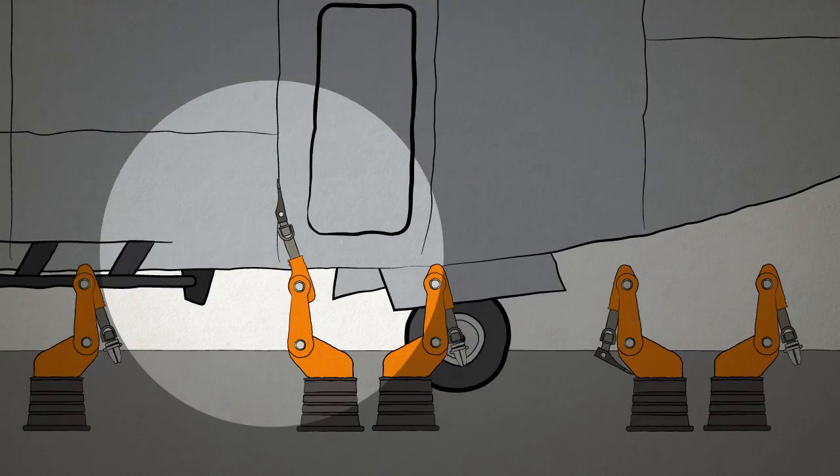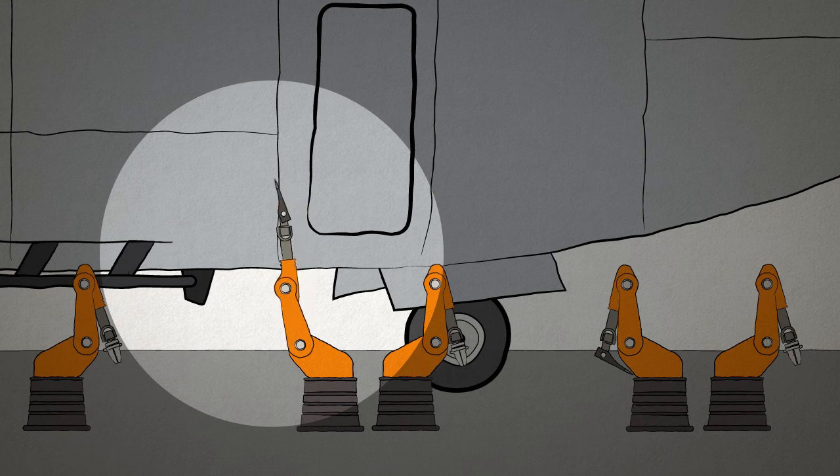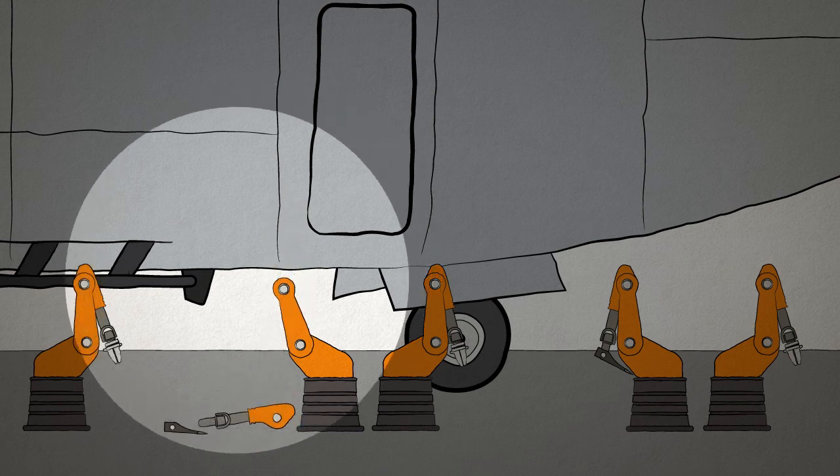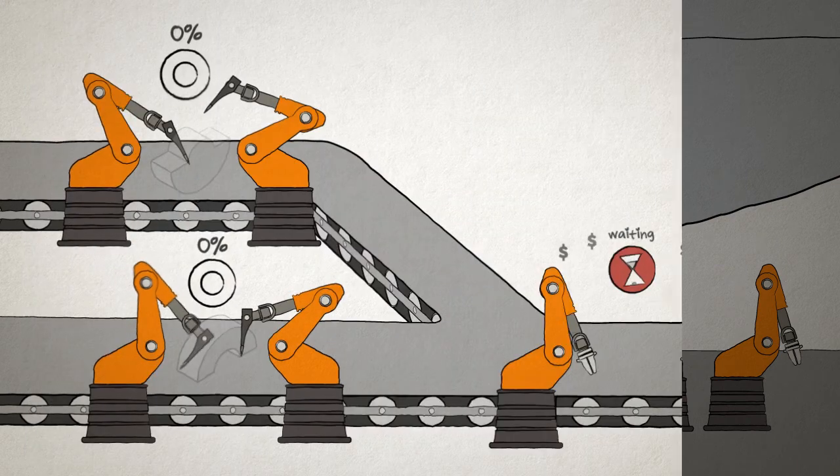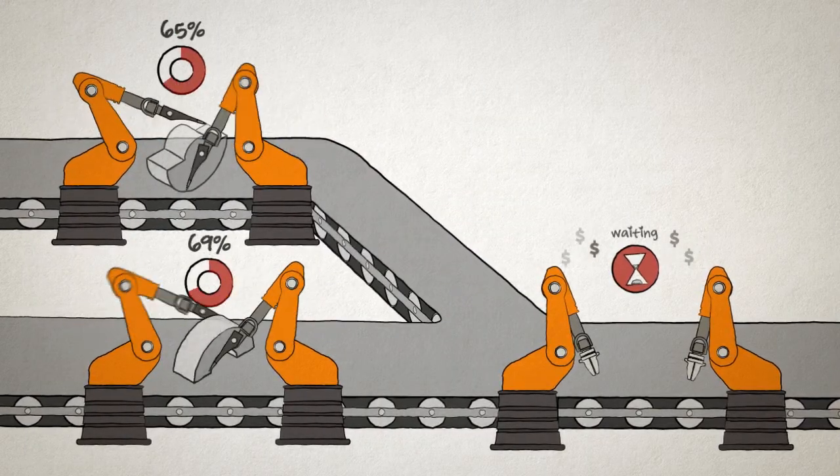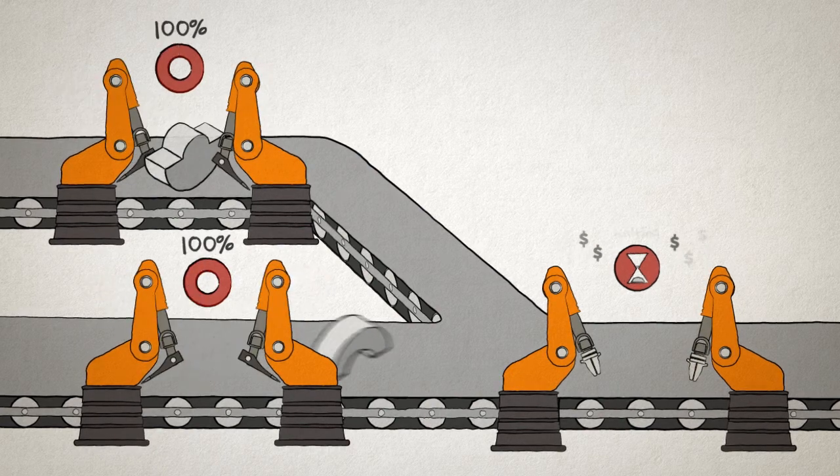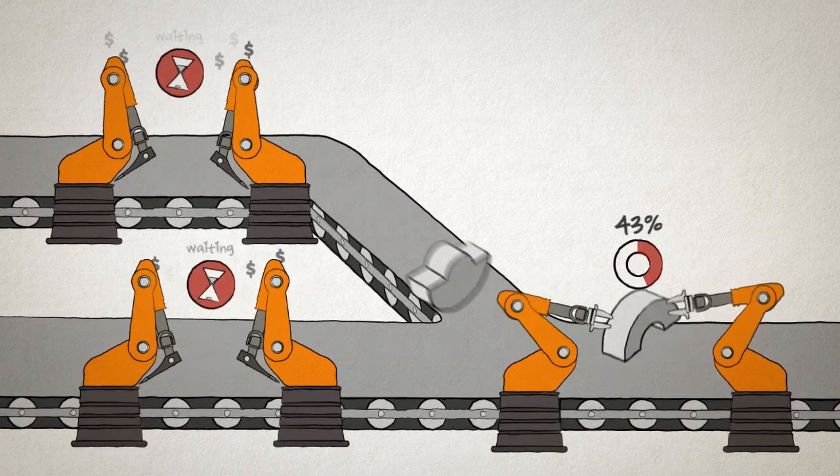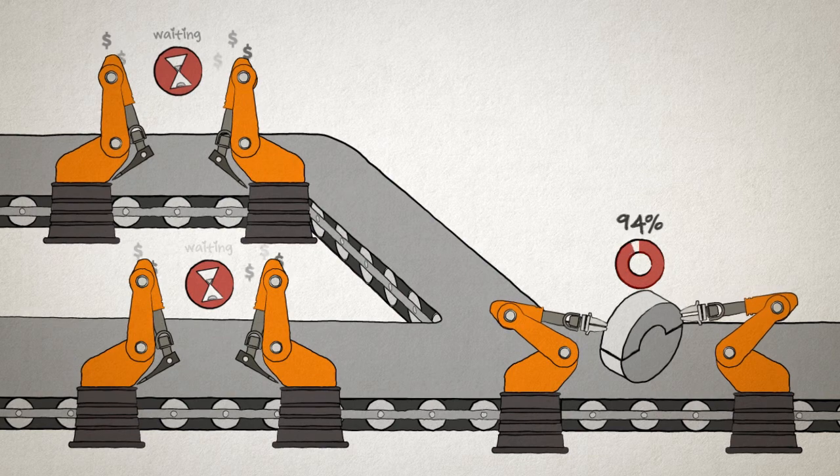One problem is that aircraft components are simply too large for the capabilities of traditional stationary robots. Another problem is that aircraft parts are typically specialized and produced in smaller quantities. So mass production assembly lines, like those used for car parts, aren't very cost effective when making planes.